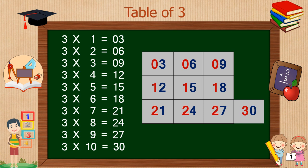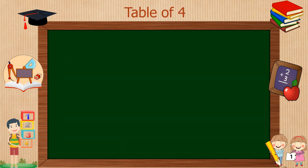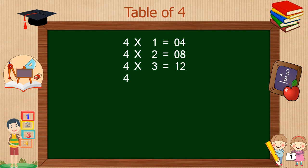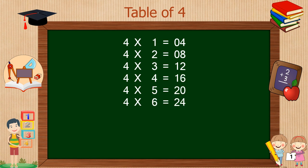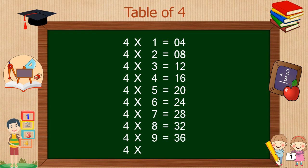Table of 4: 4 times 1 is 4, 4 times 2 is 8, 4 times 3 is 12, 4 times 4 is 16, 4 times 5 is 20, 4 times 6 is 24, 4 times 7 is 28, 4 times 8 is 32, 4 times 9 is 36, and 4 times 10 is 40.